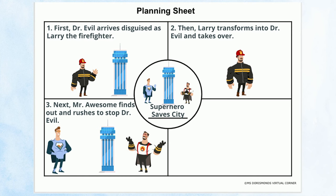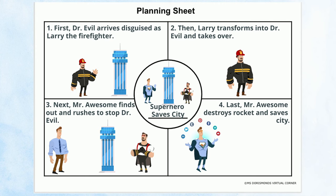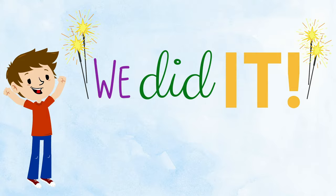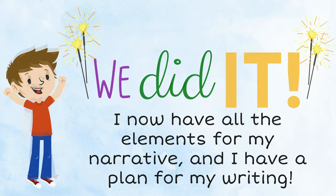Last, Mr. Awesome destroys Dr. Ice's ice rocket and saves the city of Megacropolis. Great! I now have all the elements for my narrative and I have a plan for my writing. Be sure to check out Part 3 where I write an introduction for my narrative.